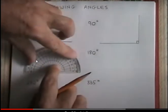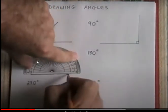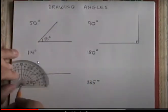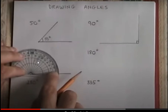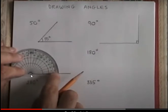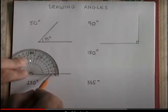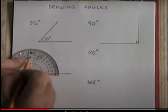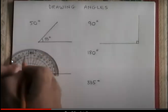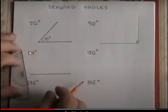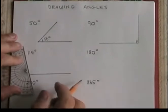114 is an obtuse angle, obtuse angle. Place the center, obtuse angle will come at the left side, left side 90 side obtuse 114, place the point and join it.